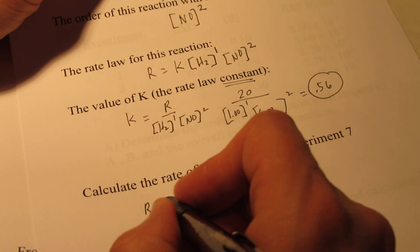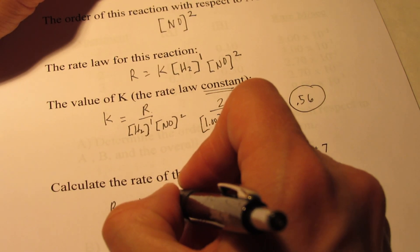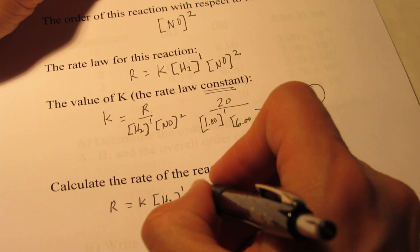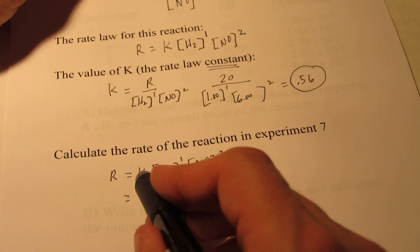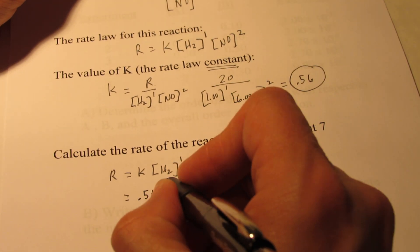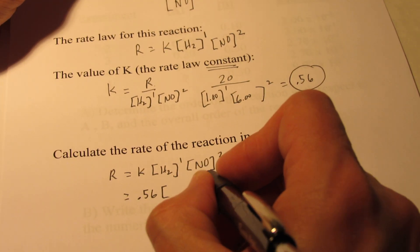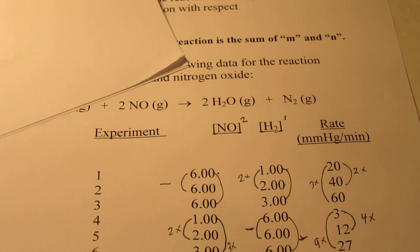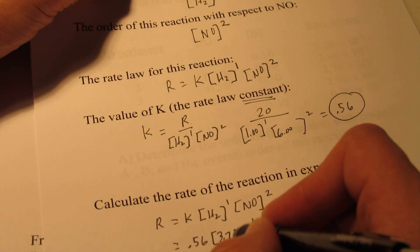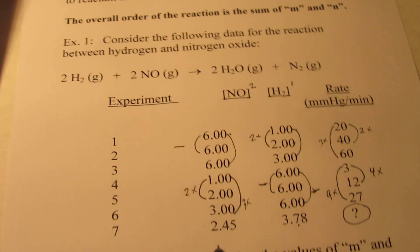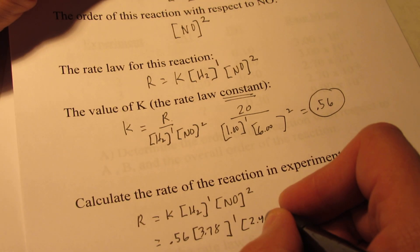So R equals K times H2 to the first and NO concentration squared, and we'll plug in these numbers. K is 0.56, and then H2 during the seventh experiment is 3.78. Let's make sure we can see that, 3.78. And the NO concentration during that experiment is 2.45, and my rate law says we have to square that.